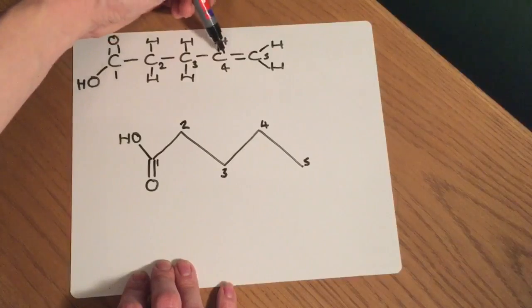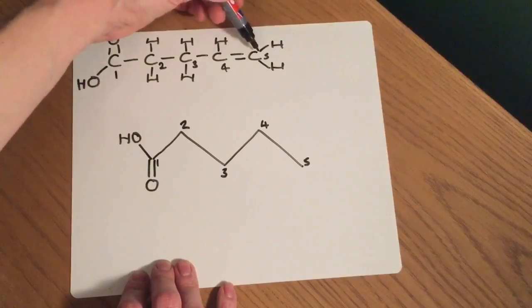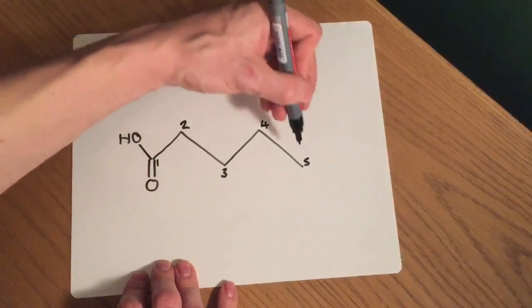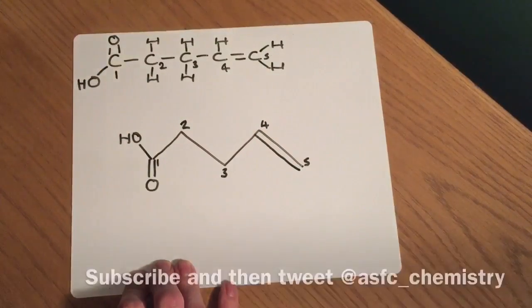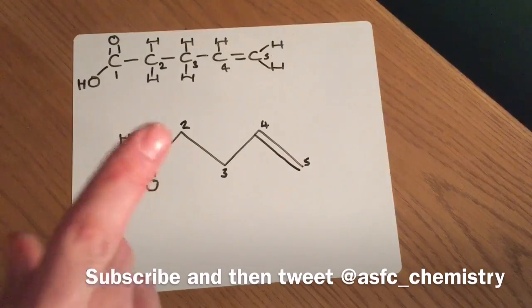Now if we look here between carbons four and five we've got a double bond. So we've got an unsaturated bond there and the way we represent that over here is literally by showing two lines next to each other like that in the structure. No one's going to think it's anything else so you don't have to worry. That is very clearly a double bond right at the end there between carbons four and five.